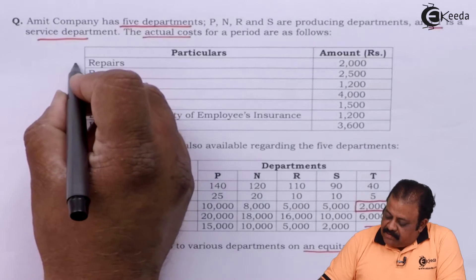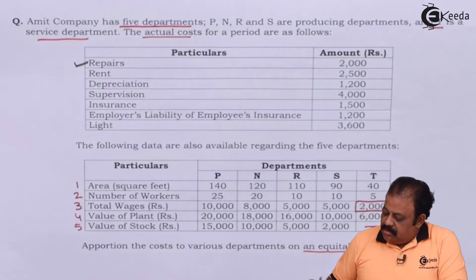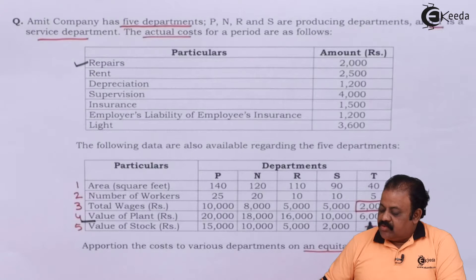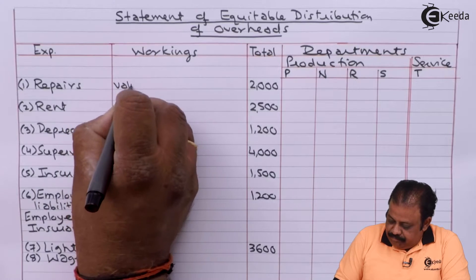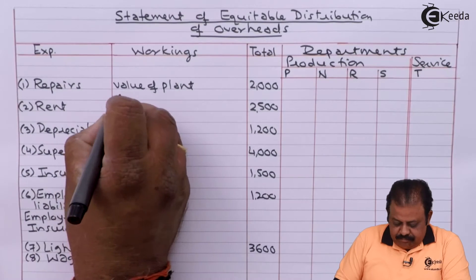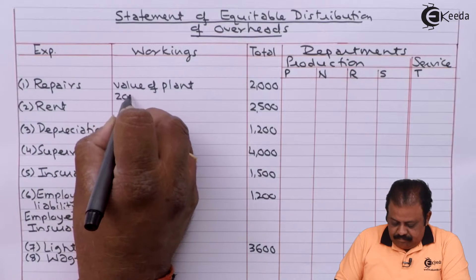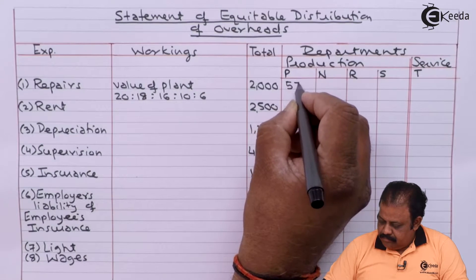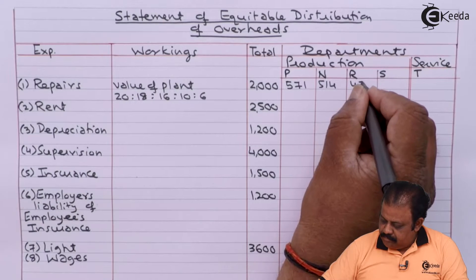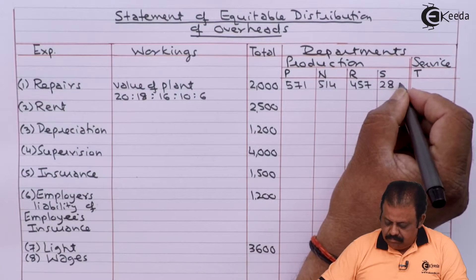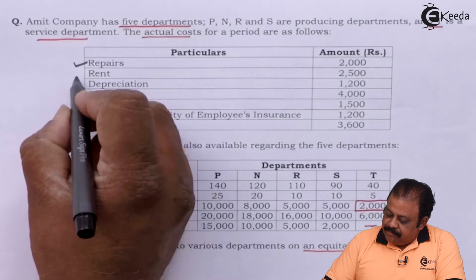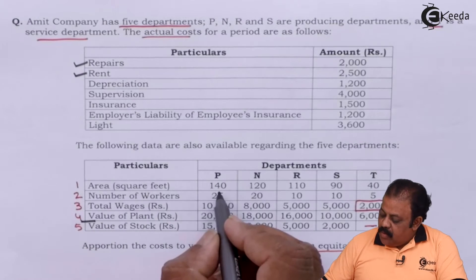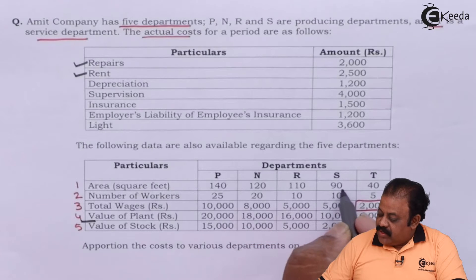First expense — repairs: it will be allocated based on value of plant, that is in the ratio of 20,000 : 18,000 : 16,000 : 10,000 : 6,000. Next — rent: this will be allocated based on area in square feet, that is in the ratio of 140 : 120 : 110 : 90 : 40.